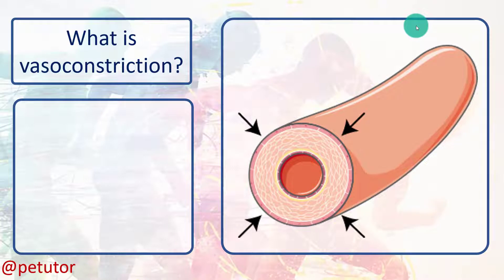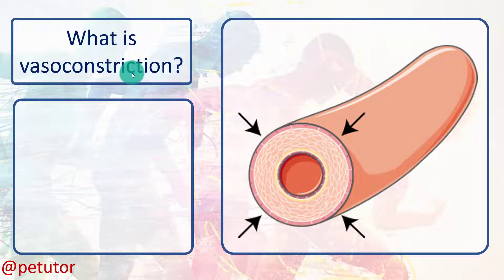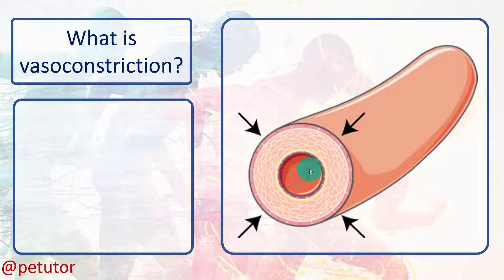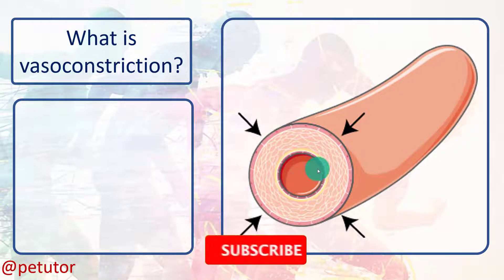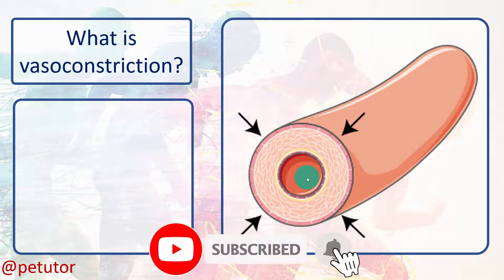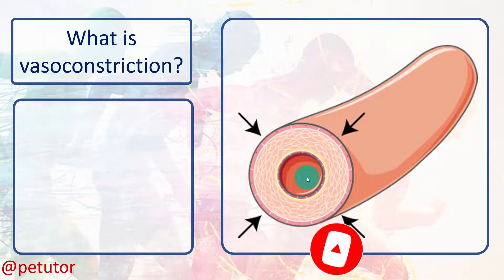What is vasoconstriction? If we look at the word, we can see 'vaso' and 'constriction.' Vaso means vessel and constriction means squeezing or tightening. So vasoconstriction refers to blood vessels which squeeze and tighten so that the actual diameter of the blood vessel gets much smaller, and as a result of that, less blood flows through the blood vessel.